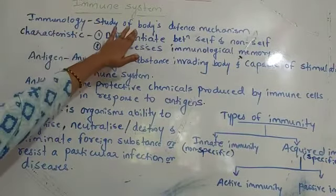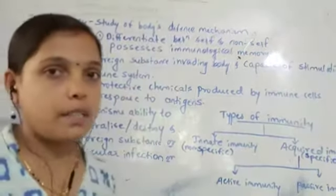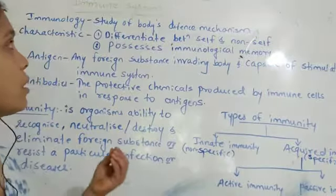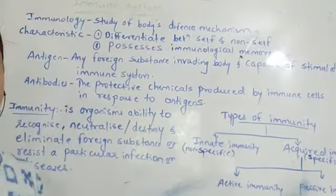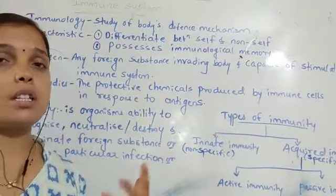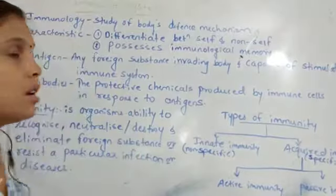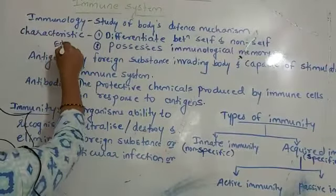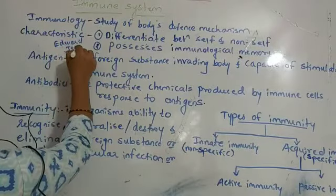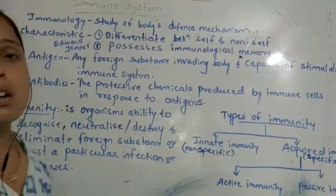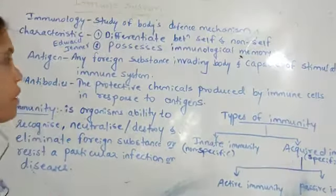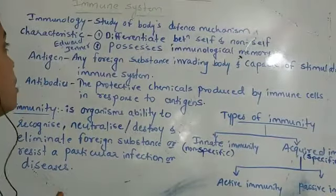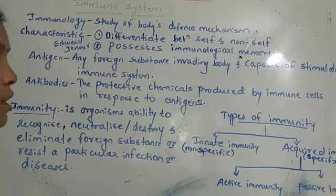Immunology is the study of the body's defense mechanism — it is the branch of science which deals with the study of the immune system, immune functions, and immune responses to particular diseases. A scientist named Edward Jenner is called the father of immunology, as he discovered the defense mechanism.